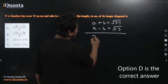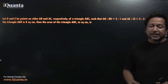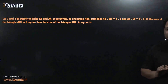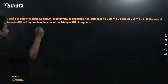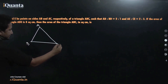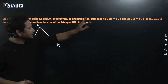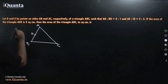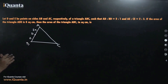Adding the two equations: 2a = √37 + √13. Now moving to the second question. Let D and E be points on sides AB and AC respectively of a triangle ABC such that AD:BD = 2:1. As we read the question we should start making the diagram. Let this be triangle ABC. Marking D on AB so that AD:BD = 2:1, let AD = 2a and BD = a.